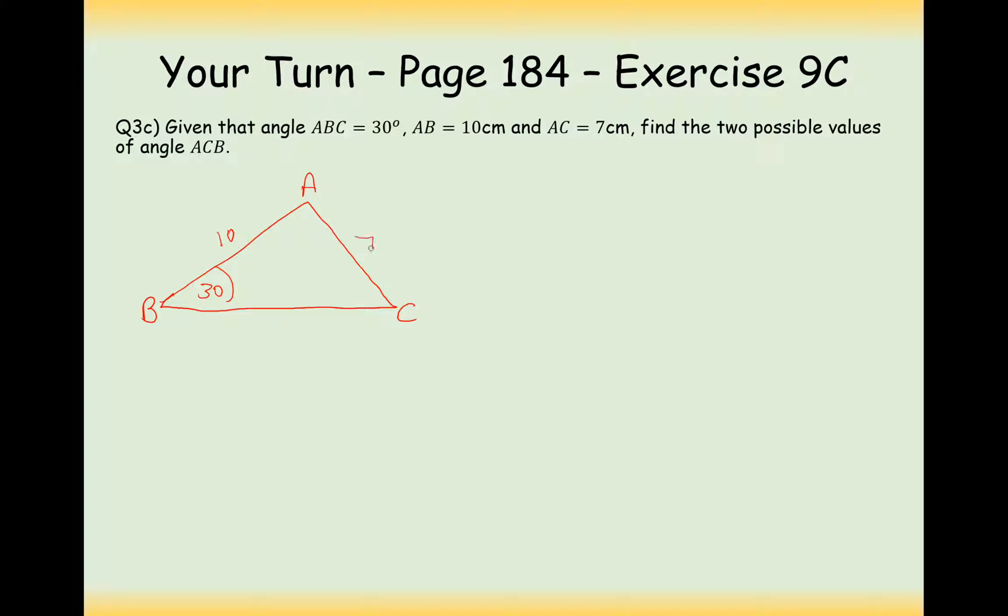A to B is given as 10 centimeters, A to C is given as 7 centimeters, find two possible angles for ACB. So this angle here. Alternatively, this 7 centimeter line could have come back in at an angle, so we could potentially be working out this angle as well. Let's work out this angle here first.